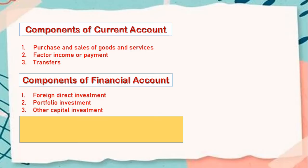The third component of the financial account is other capital investment, which consists of transactions involving short-term financial assets such as money market securities. It can also include official reserves — a country's reserve of other currencies. For example, if the US Federal Reserve holds Bangladesh Taka or Indian Rupees in their reserve fund, that is considered other capital investment.